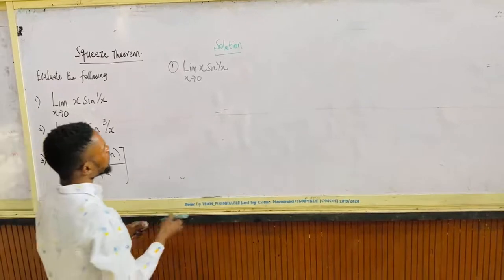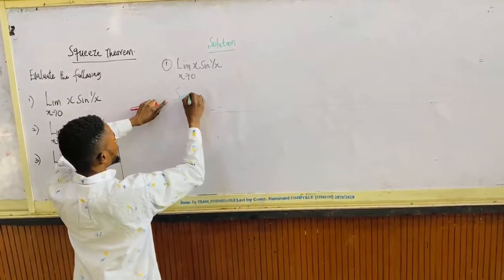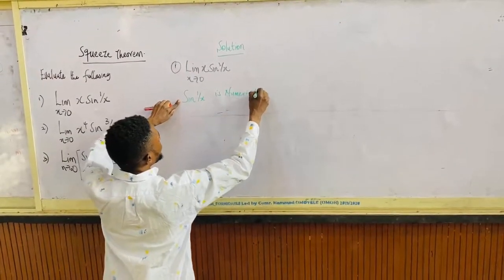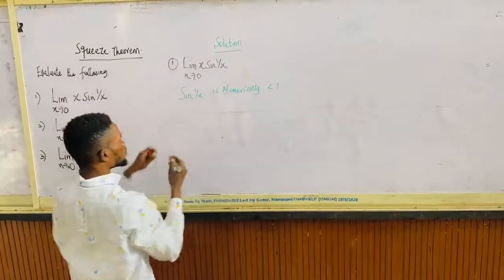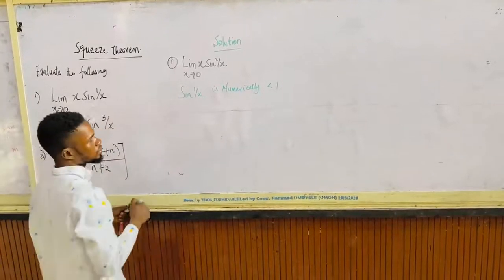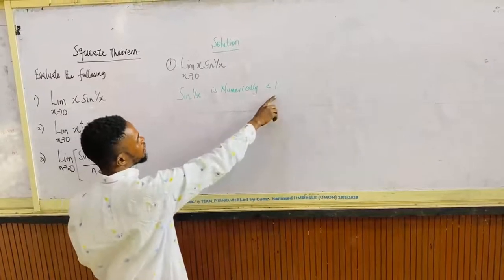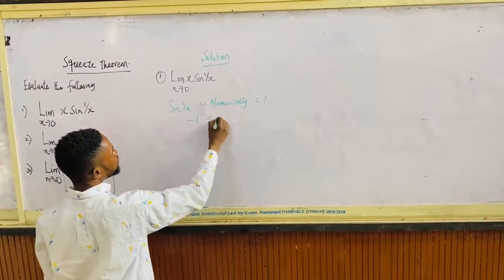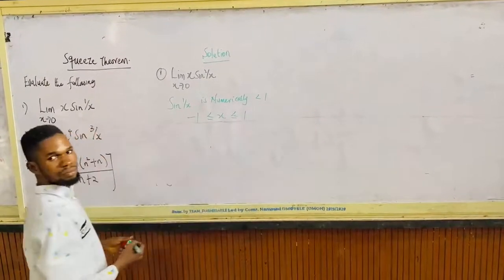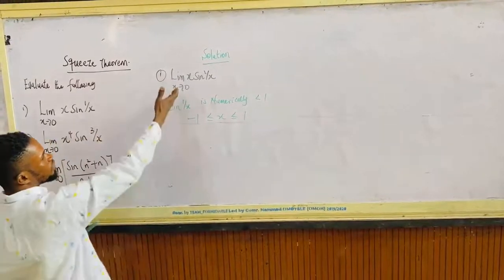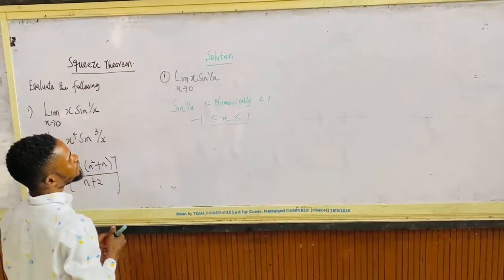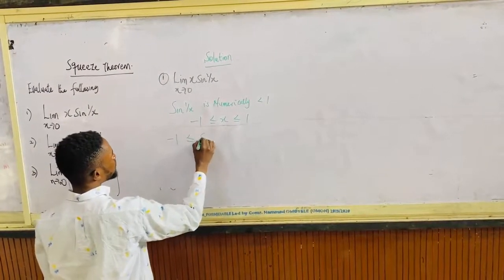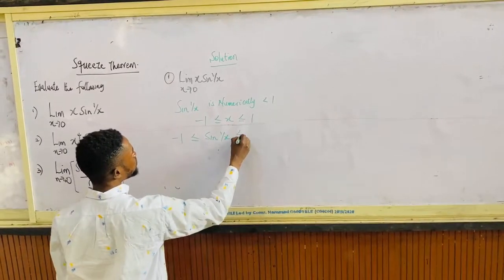Now, this sine 1 over x is numerically less than 1. No matter the value of x, sine 1 over x is numerically less than 1. So that means it falls in this interval: minus 1 less than or equal to sine 1 over x less than or equal to 1. So to evaluate the limit of x sine 1 over x at which x tends to 0, that means minus 1 is less than or equal to sine 1 over x less than or equal to 1.